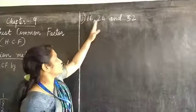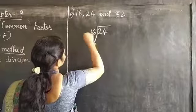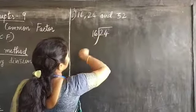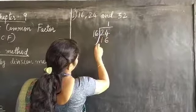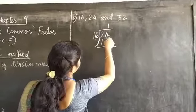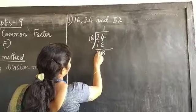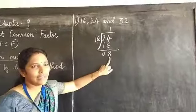We are going to divide 24 by 16. How many 16s are there in 24? 16, 1 is 16. 24 minus 16, 8. We got the remainder here, 8.